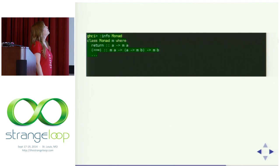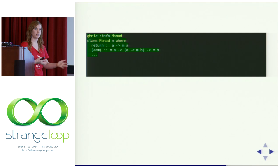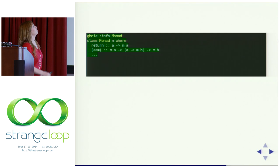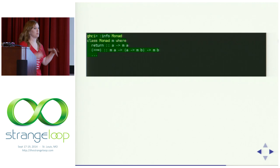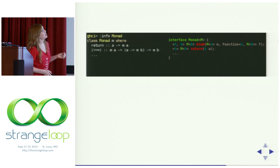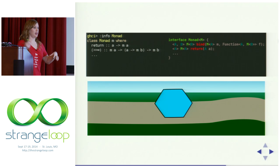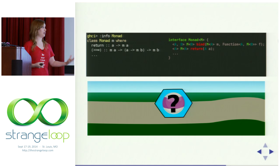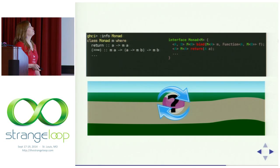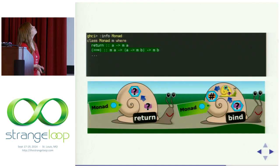If we do info on Monad in GHCI, we get Monad m, where m is a type constructor like the f we saw with Functor. We've got two functions: return and bind. Return is nothing like the imperative return you may have seen — disconnect that. The bind function, written with that funny symbol, is infix. If we imagine this in Java as an interface, it wouldn't compile again because of those M of A and M of B types requiring higher-kinded types. Examples: list is a monad, IO is a monad, and a whole number of other things.